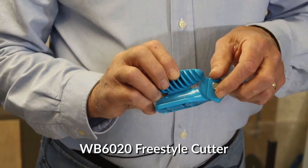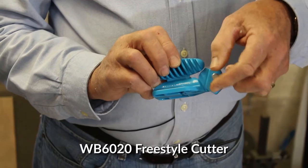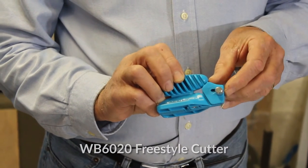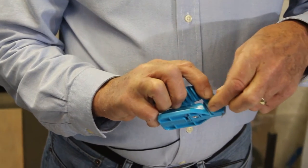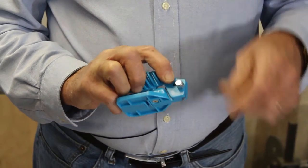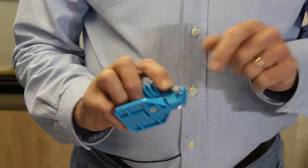This is the Foamworks freestyle cutter. To use, you release this knurled knob, pull back this piece here which protects the blade and then expose the blade and tighten that back down.